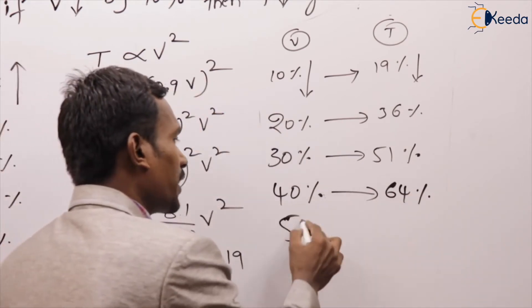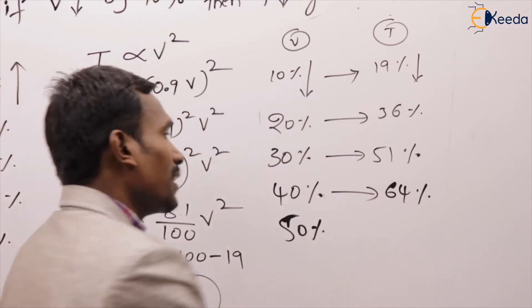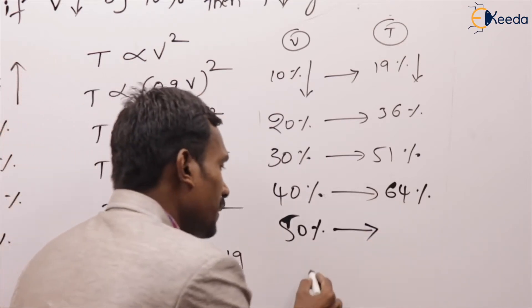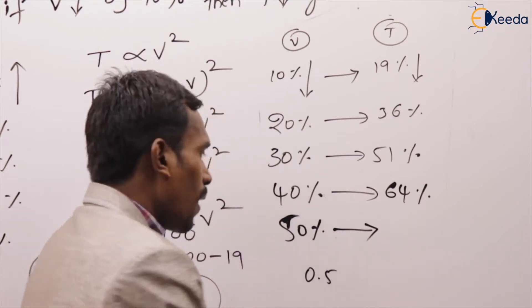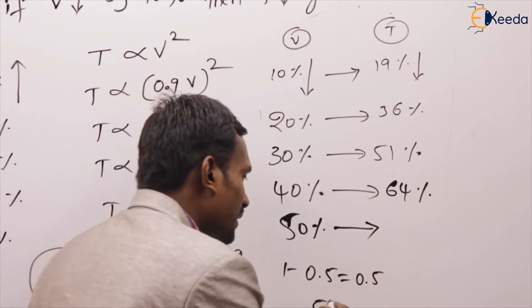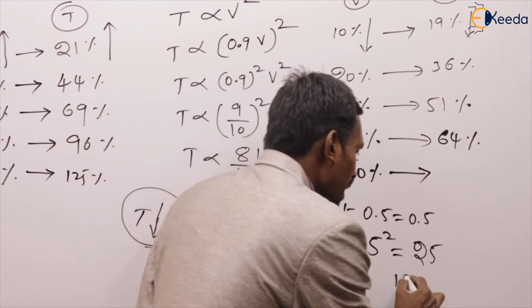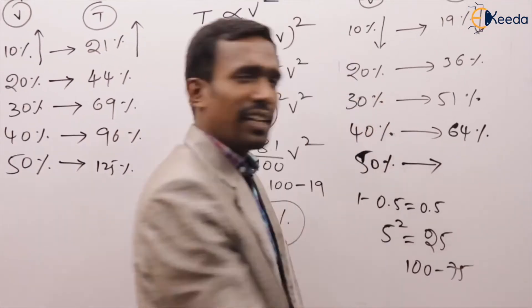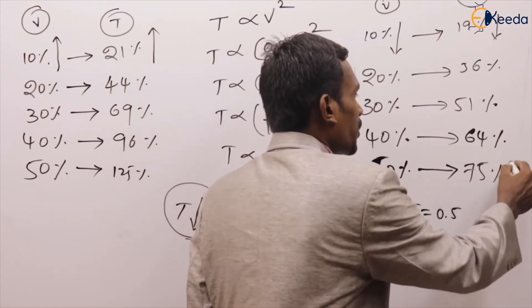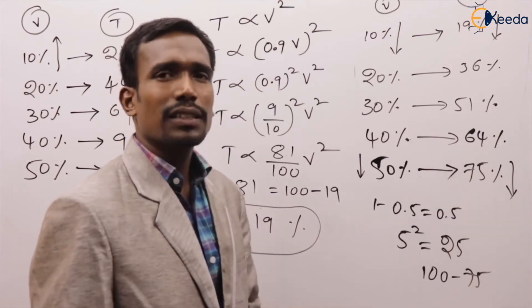If voltage reduced by 50%, the factor is 0.5, so 0.5 squared = 0.25, meaning 5 squared = 25, which is 100 minus 75. So torque reduced by 75%.